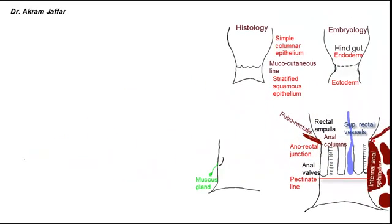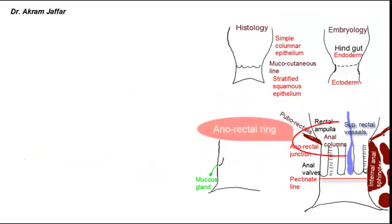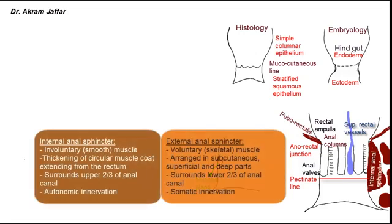The deepest part of the external anal sphincter fuses with the puborectalis part of the levator ani muscle at the anorectal ring, which is marked by the upper end of the anal columns of Morgagni. The internal anal sphincter, being formed of smooth muscle, is innervated by autonomic nerves and is involuntary, while the external anal sphincter is the voluntary sphincter.